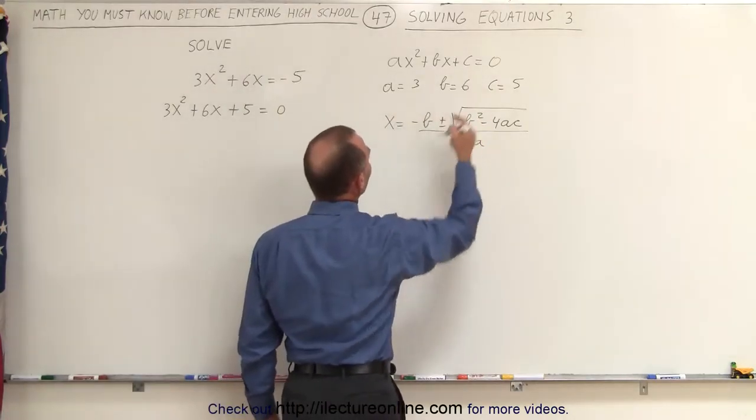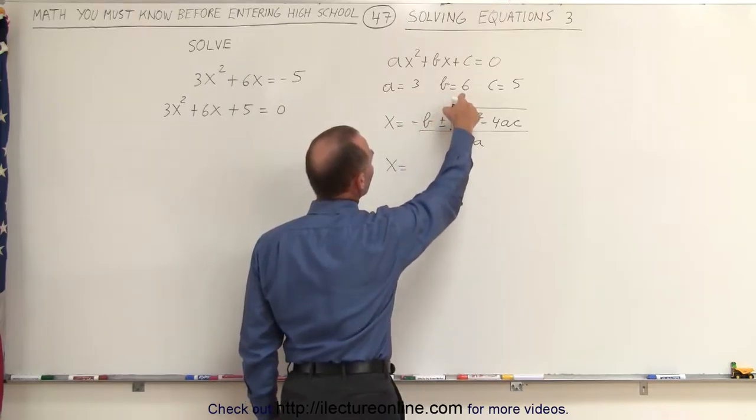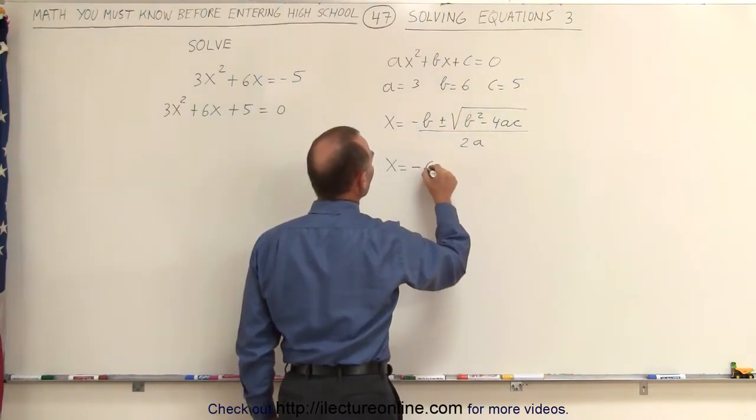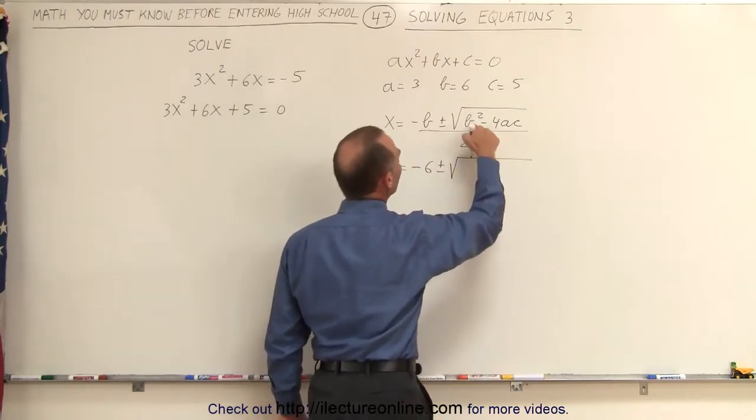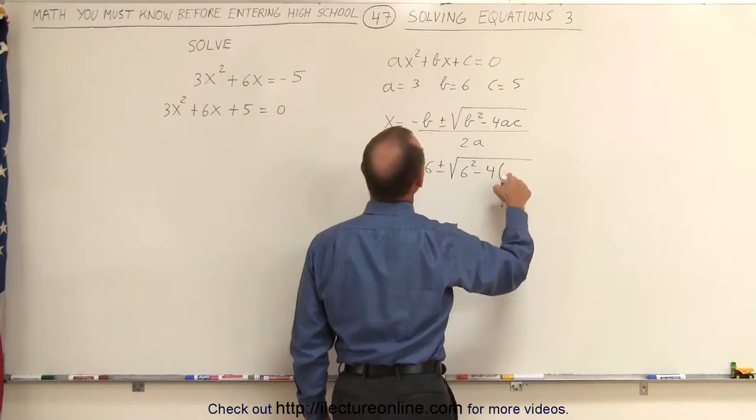So when we plug in these values, we get x is equal to -b, since b is 6, -b would be -6, plus and minus the square root of b², which is 6², minus 4, times a, which is 3...